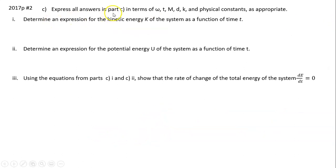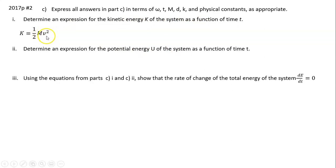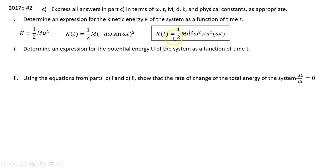Part C: Express all answers in terms of ω, t, m, d, k, and physical constants as appropriate. Part C number one: determine the expression for kinetic energy of the system as a function of time. Kinetic energy is one-half mv². We already know v as a function of t, so plugging it in, the simplified expression is K(t) = one-half m·d²·ω²·sin²(ωt). The negative sign disappears because negative squared is positive.